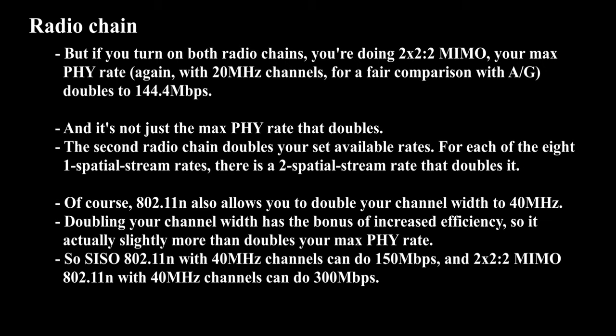For each of the 8 single spatial stream rates, there is a 2-spatial-stream rate that doubles it. Of course, 802.11n also allows you to double your channel width to 40 MHz. Doubling your channel width has the bonus of increased efficiency, so it actually slightly more than doubles your max PHY rate. So SISO 802.11n with 40 MHz channels can do 150 Mbps, and 2×2:2 MIMO 802.11n with 40 MHz channels can do 300 Mbps.